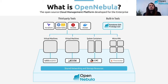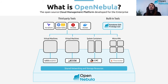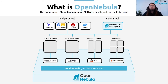OpenNebula also integrates with third-party tools like Terraform, Kubernetes, Ansible, and Docker. Related to Docker, we have an integration with Docker Hub so you can download an image from Docker Hub and run it in your OpenNebula installation. We also have built-in tools like Sunstone, which is the graphical user interface, and FireEdge, which is the GUI used to deploy edge clusters and manage all related resources.